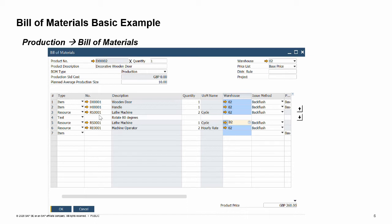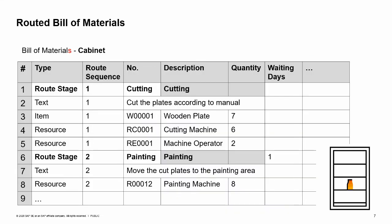At the bottom of the window, we can define the product price manually or generate it automatically according to the component prices, taken from the selected price list, and resource cost. Starting from version 9.3, patch level 02, a bill of materials can also be structured in stages, allowing production routing procedures.